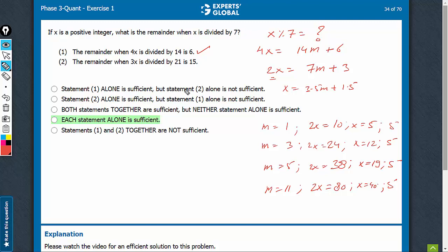Look at statement 2. This means 3x is equal to 21n plus 15, where n is a positive integer. Divide the entire equation by 3, we get x is equal to 7n plus 5. x is 7 times a positive integer, plus 5, and therefore x when divided by 7 will leave a remainder of 7n plus 5 is what we have here.